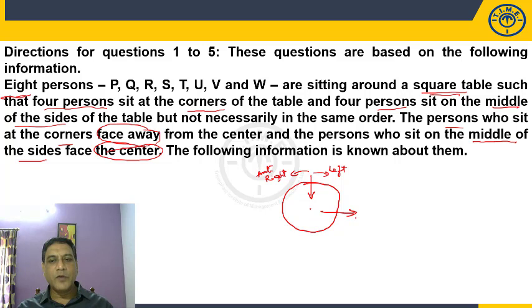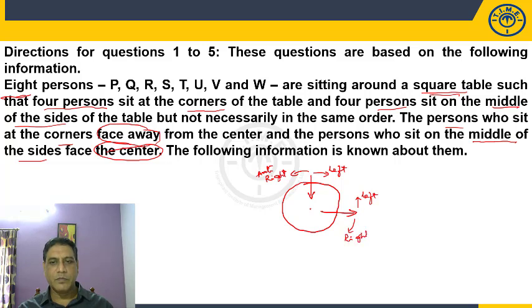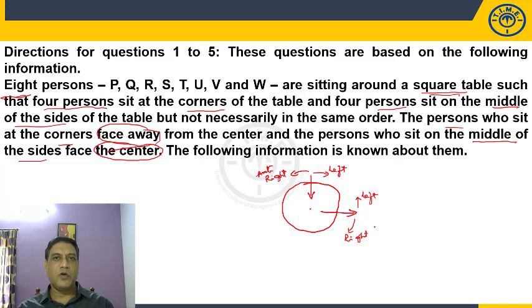Now, what happens to the person who is facing away from the center? It is exactly the opposite. For a person facing away from the center, the left is in the anticlockwise direction and right is in the clockwise direction. This is a basic concept that we have to keep in mind.